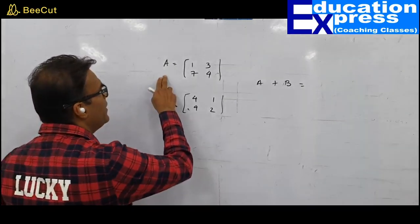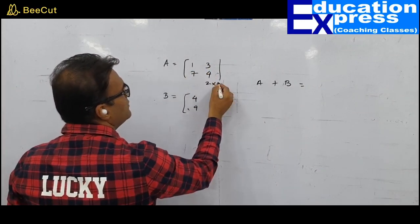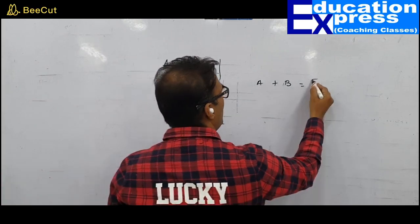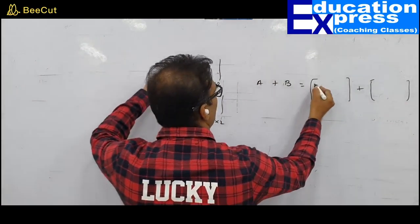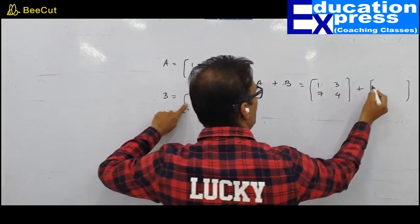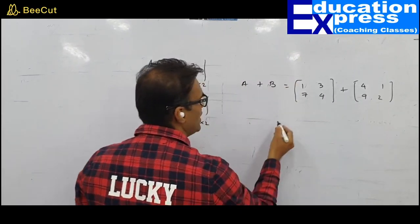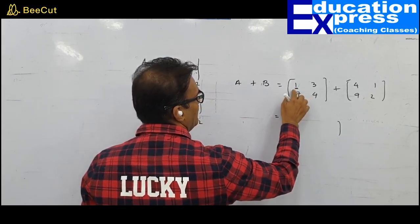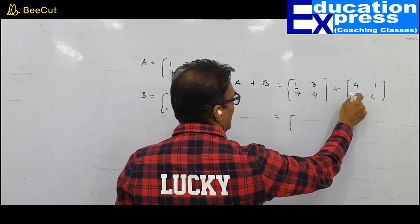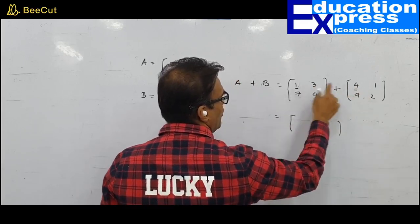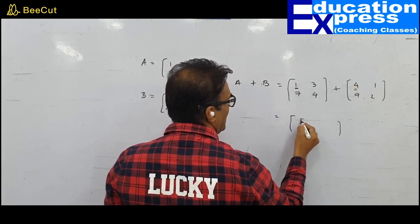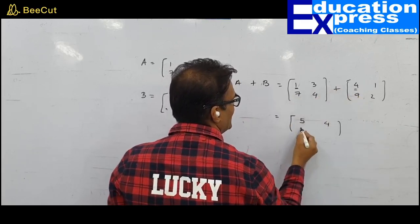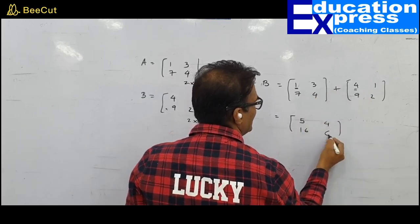How do we add them? Substitute the values: matrix A is [1, 3, 7, 4] plus matrix B is [4, 1, 9, 2]. Elements in corresponding positions are added: 1+4=5, 3+1=4, 7+9=16, 4+2=6. So two matrices can be added provided they are of the same order.